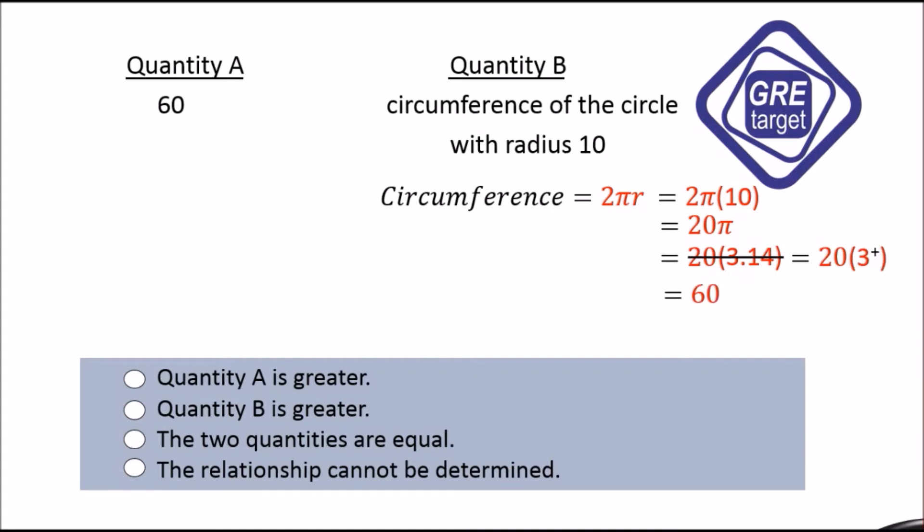Our calculation gets easy. 60 plus... So we can clearly see that quantity A is less than quantity B. Therefore, quantity B is greater than quantity A.